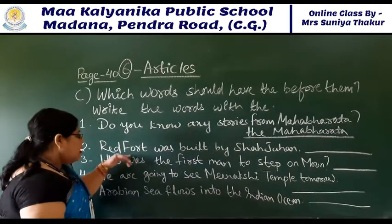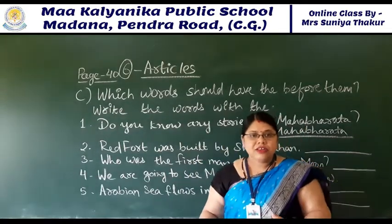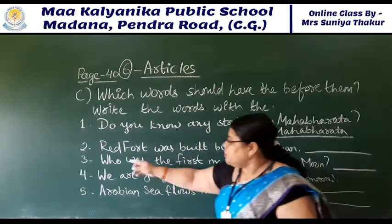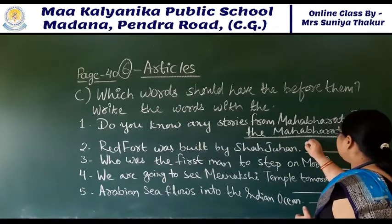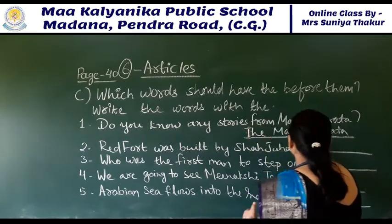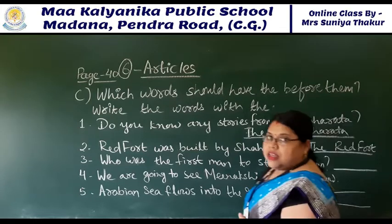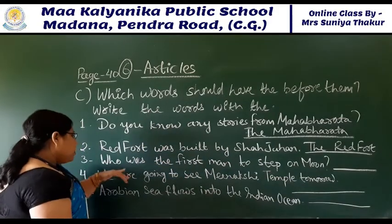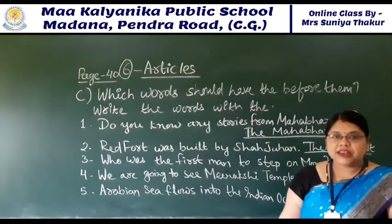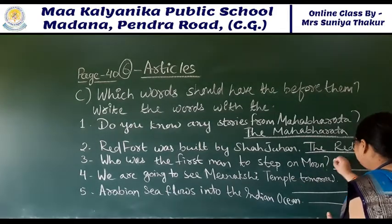The Red Fort was built by Shah Jahan. Near a particular monument also we have to use 'the' - for buildings and monuments we have to use 'the'. So here what will come? The Red Fort. Who was the first man to stay on the moon? Moon is a particular celestial body - the sun, the moon. So here we will use: the moon.